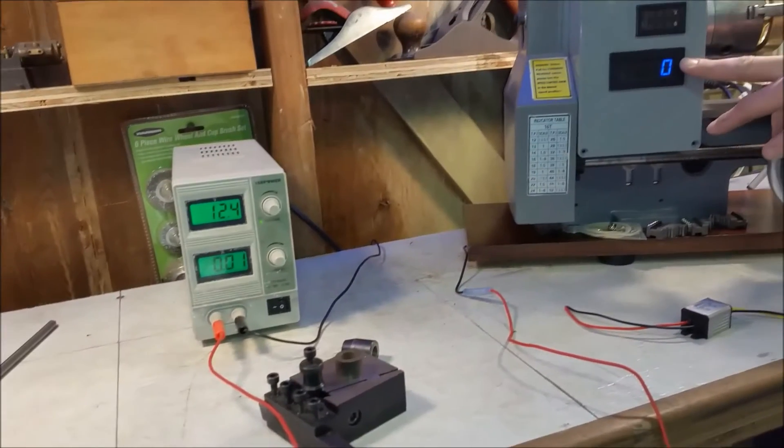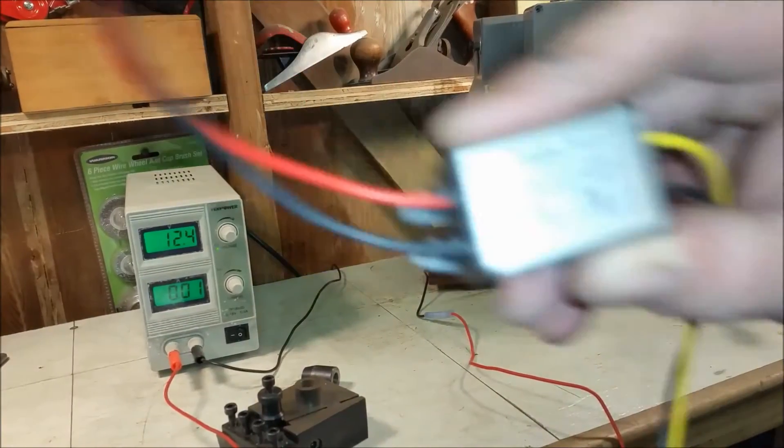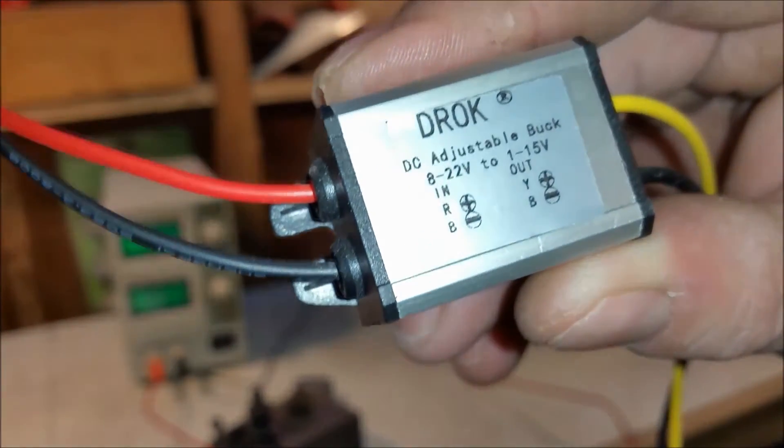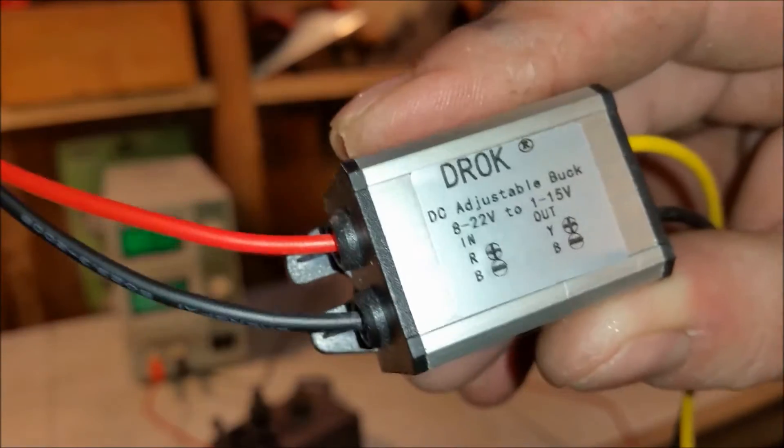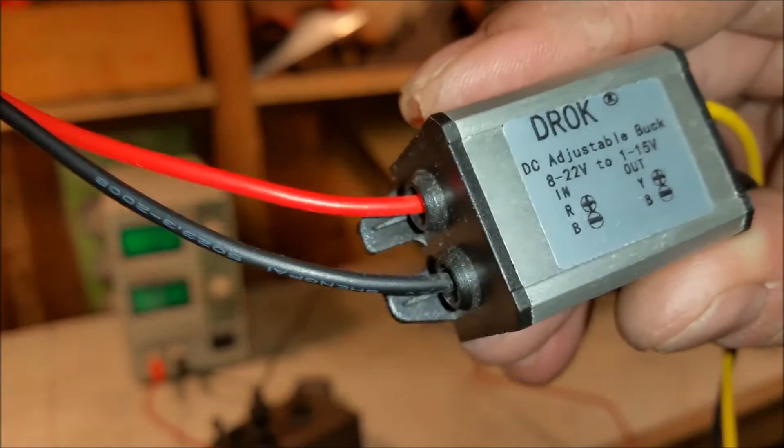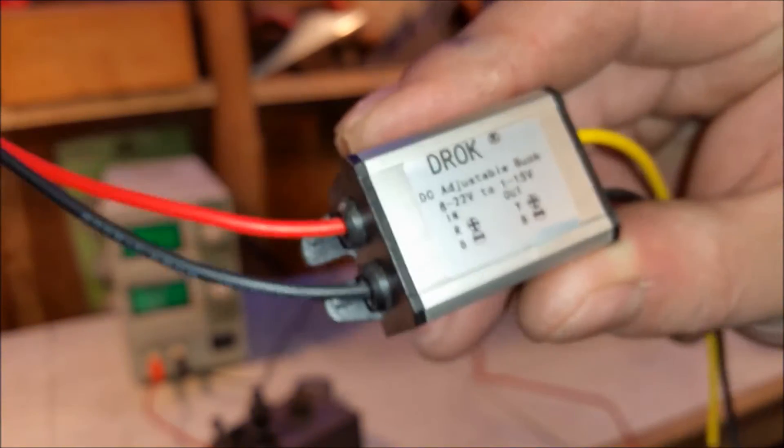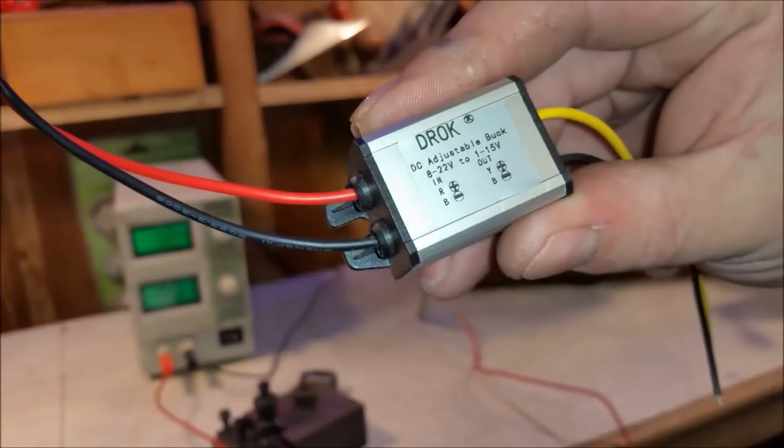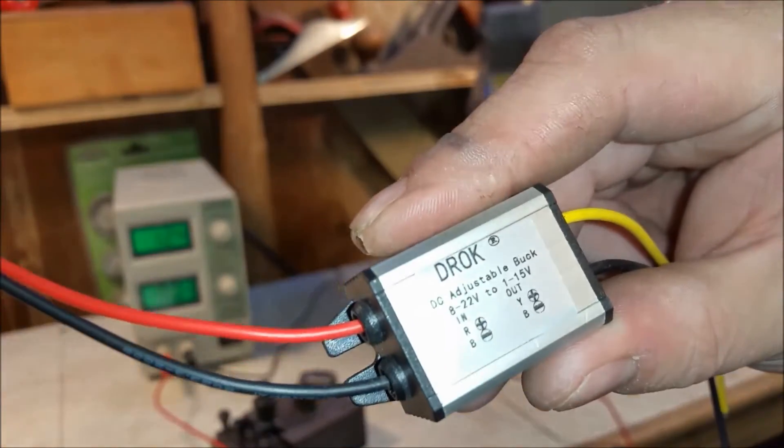I've ordered a different controller. If you look at this one, it's only 22 volts, so I'm afraid if I put 26 or 27 volts it will blow it up. So I've ordered a different one that runs from 5 to 35 input, and then the output can give me around 12 volts. We'll do that installation.